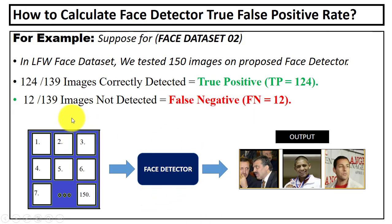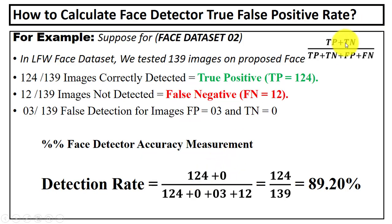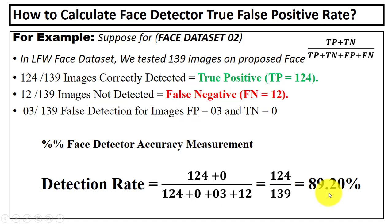For the LFW dataset, the value for FN — images not detected — is 12, and we also have three images out of 139 that are false detections, so the value for FP is 3. The value for TN is 0, as the face dataset contains only face images. Putting in the values — TP is 124, TN is 0, FP is 3, FN is 12 — we got 89.20 percent face detection accuracy for the LFW face dataset.